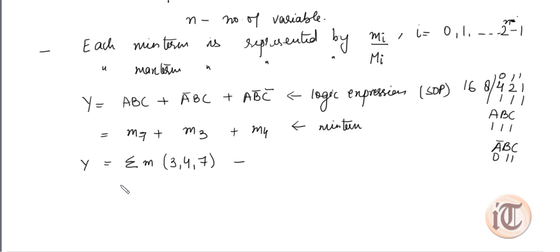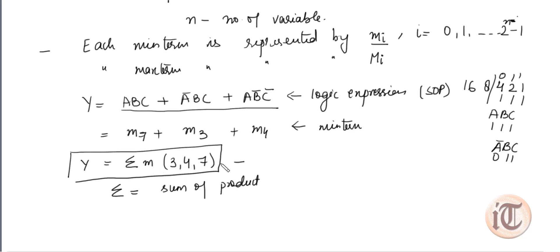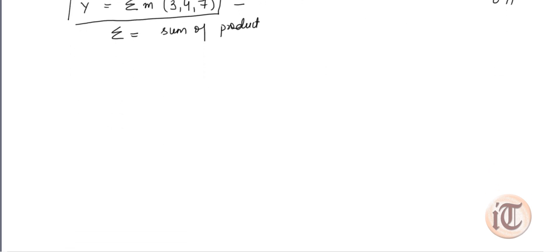The sigma symbol (Σ) denotes the sum of products. So the logic expression y = abc + a̅bc + ab̅c̅ can be written in shorthand as y = Σm(3, 4, 7). This is the use of the concept of min term.